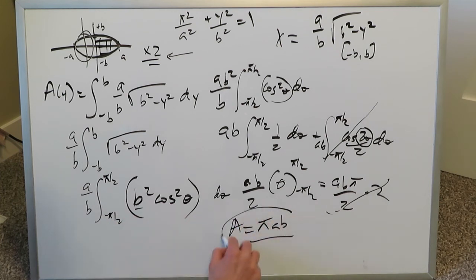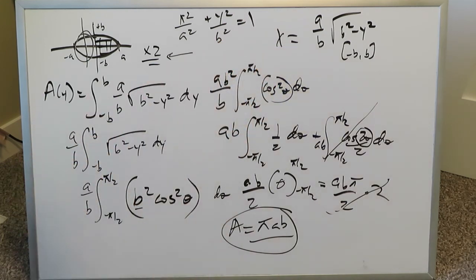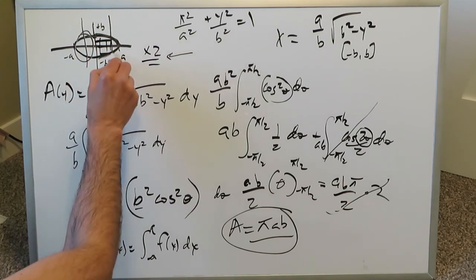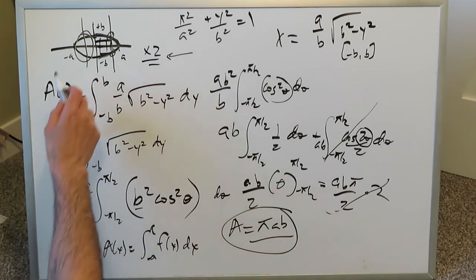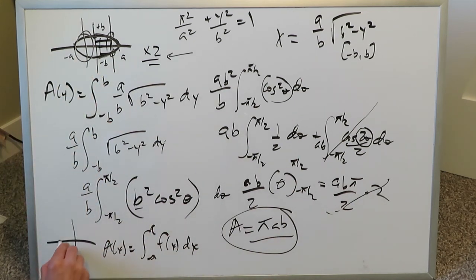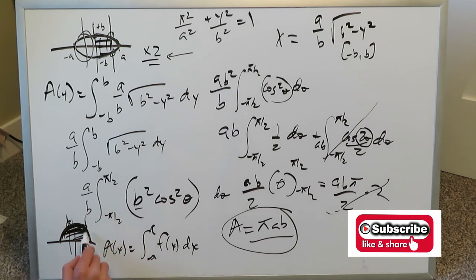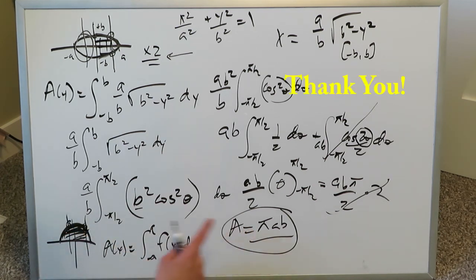That is the derivation for the ellipse area formula, giving πab — the area within the ellipse. Had we done everything with respect to dx, we'd use the y-equals equation from −a to a and integrate with respect to dx. That full ellipse curve is not a function since it doesn't pass the vertical line test, but the y-equals half-curve is a function. Either way, you still arrive at πab as the area of the ellipse formula. That's it for this video — thank you for watching, have a nice day.